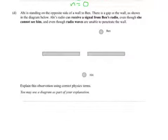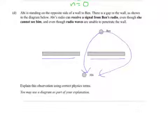Last question, D. Abby is standing on the opposite side of a wall to Ben. There's a gap in the wall as shown in the diagram below. Abby's radio can receive a signal from Ben's radio even though she cannot see him, and even though radio waves are unable to penetrate the wall. So you're assuming that there's radio waves going around the wall in some way or other, or over the wall. Explain this observation using correct physics terms. You may use a diagram. This is also a very classic question.